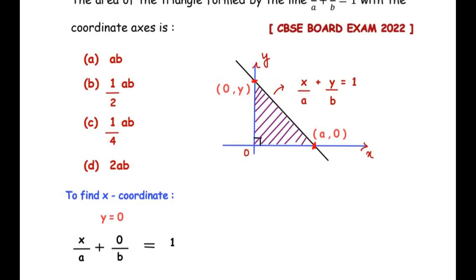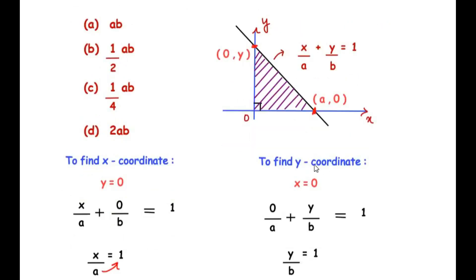Now let us try to find out the value of the y-coordinate. So here, we have to find the y-coordinate. We have to make the value of x as 0. So in this given expression, we have written 0 divided by a plus y divided by b equals 1.